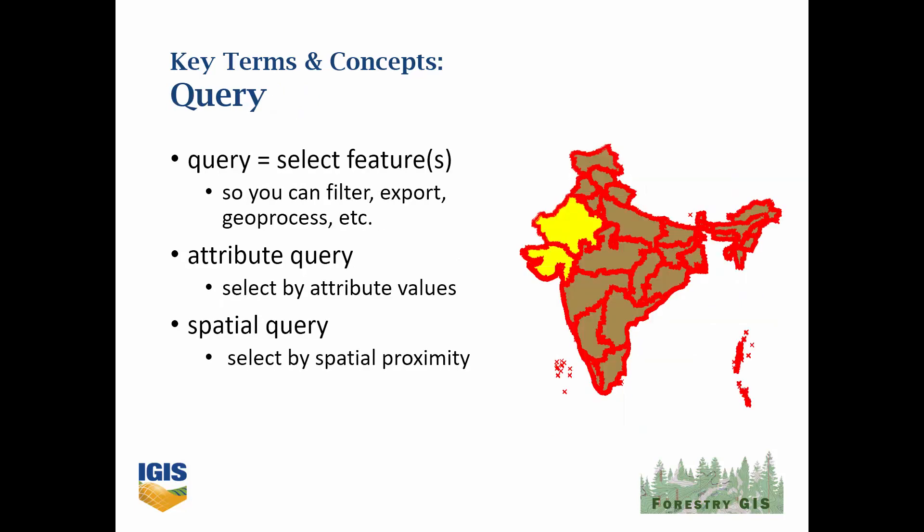Query is a fancy word for select. You might want to select features to change their appearance, to save them as a new layer, or to use them in a geoprocessing task. There are basically two types: attribute queries, where you select features based on their attribute values — for example, give me all the polygons where the population is greater than X — and spatial queries, where you select features based on their spatial proximity to something else, such as all polygons that intersect a river or are adjacent to something.